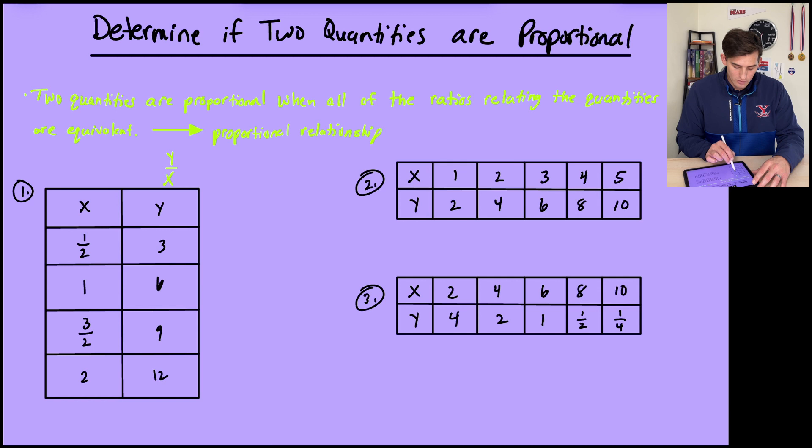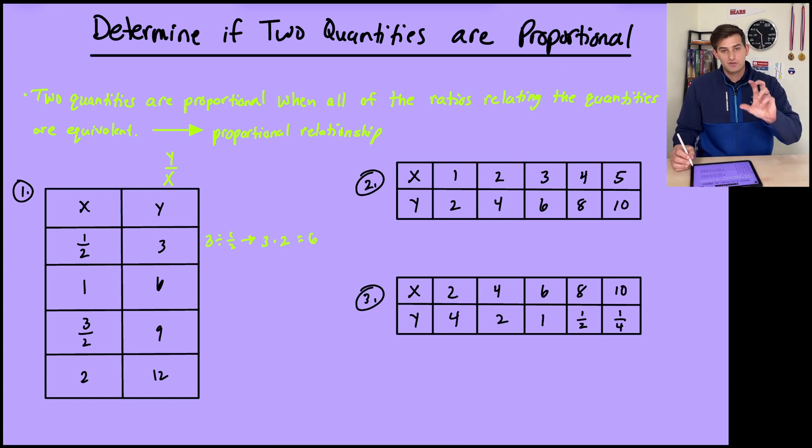All right, so for number one, we're going to do 3 divided by 1/2. Well, we know when we divide by fractions, we can change to multiply. And 1/2 would be 2 over 1, which is just 2. So 3 times 2 is 6. So the result of my division here, y divided by x, is 6.